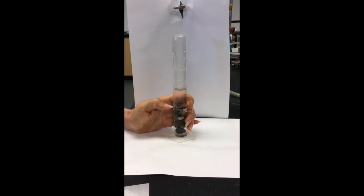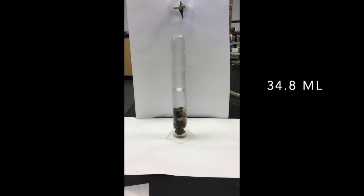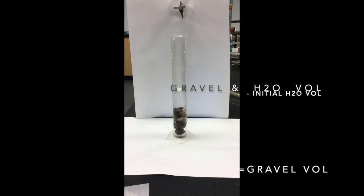This is just below 35, so it's between 34 and 35 ml, and again I'm going to estimate where the bottom of the meniscus is. I'm going to call this 34.8 milliliters. Now, by subtracting the difference of my two volumes, I can calculate the volume of the rocks.